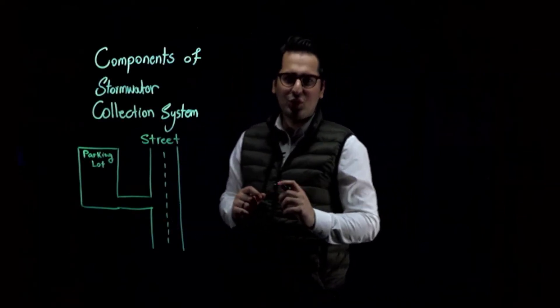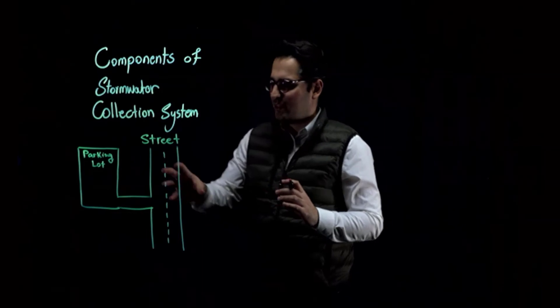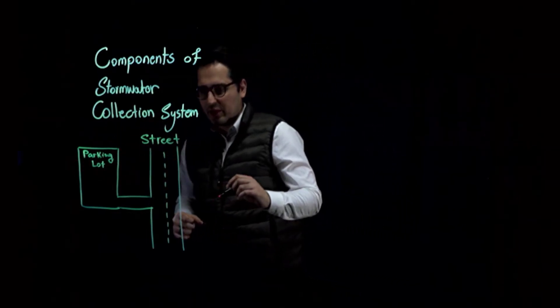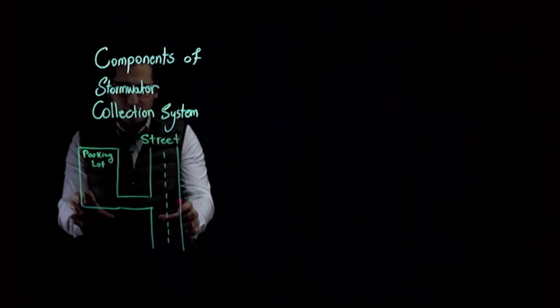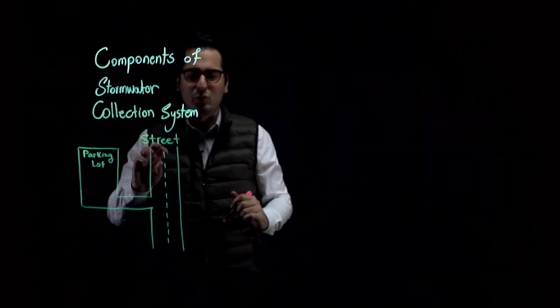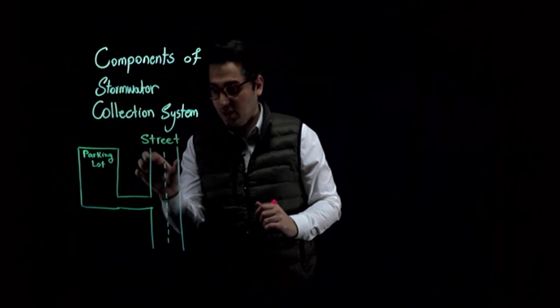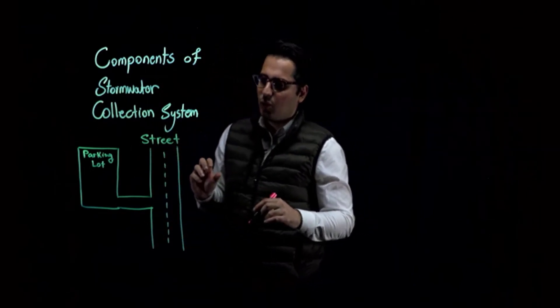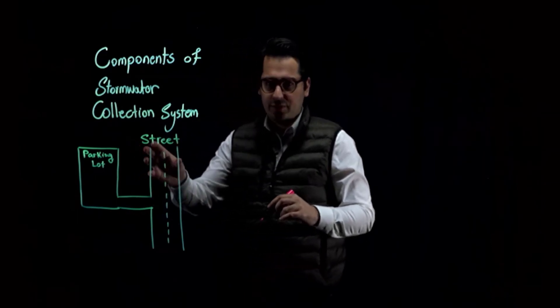Let's start with the components of stormwater collection system. Take a look at this sample parking lot and the street that I have for you. These two areas are impervious, meaning that water is not going to naturally infiltrate in the soil in these surfaces because they are paved. So water is going to run off the surface.